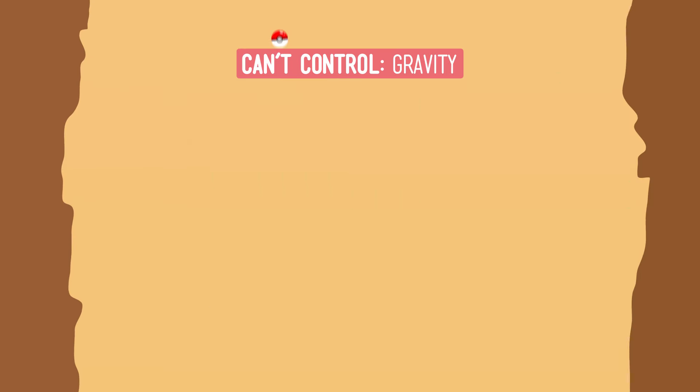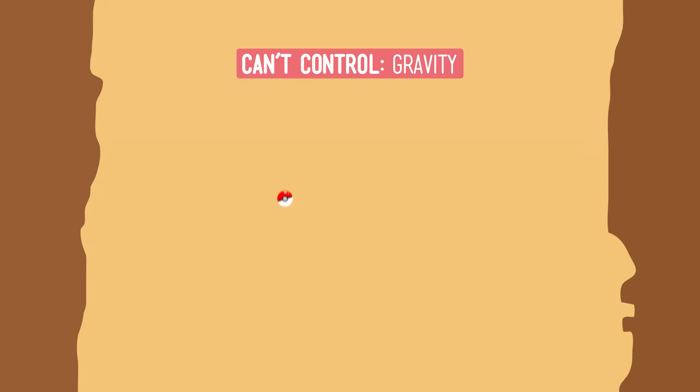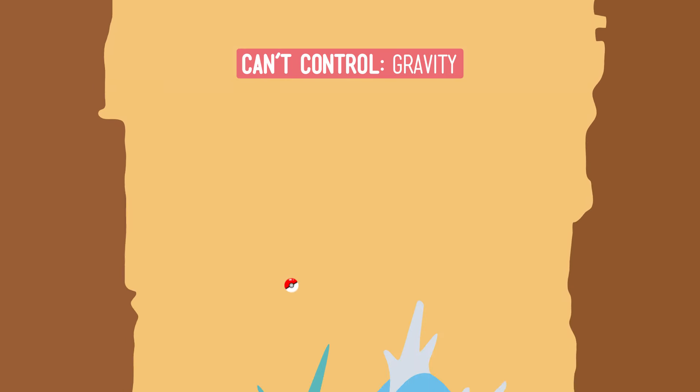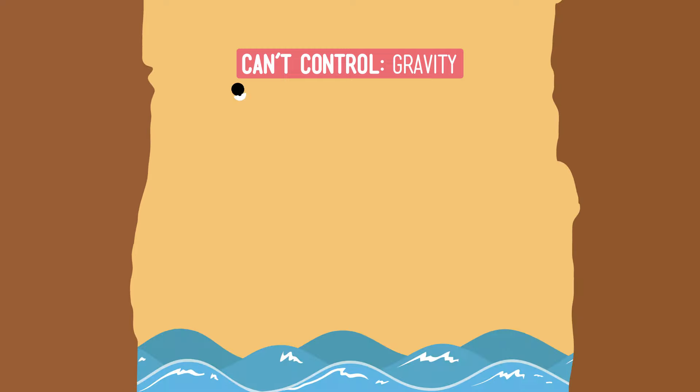But one thing we can't change is the gravity that pulls the ball towards the center of the Earth after we drop it. That's not a variable we can control.